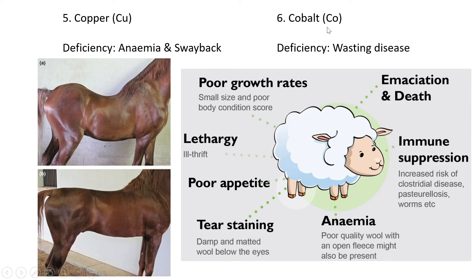A cobalt deficiency can cause wasting disease — basically a thin animal that doesn't have enough muscle mass and is very skinny. Signs associated with wasting disease include poor growth rates, lethargy, poor appetite, and tear staining, which is unique. Particularly in sheep, it looks like the animals are crying, with tear stains between the eyes and the nose — basically just because of the cobalt deficiency. They also have a lowered immune system if there's a cobalt deficiency.